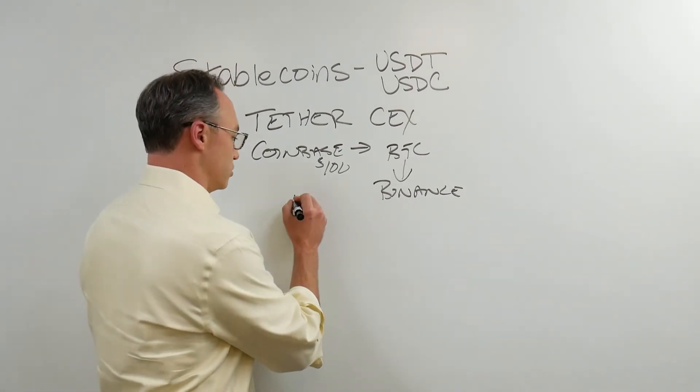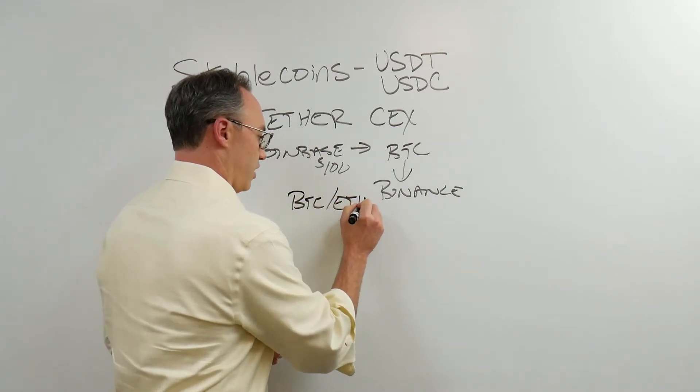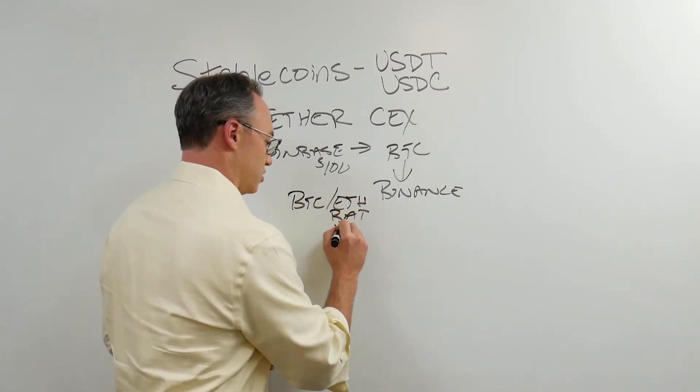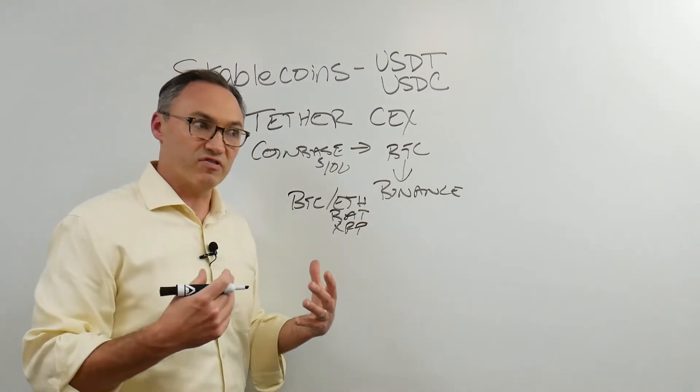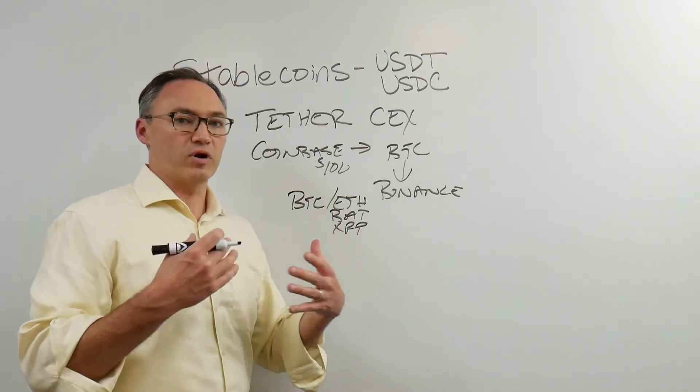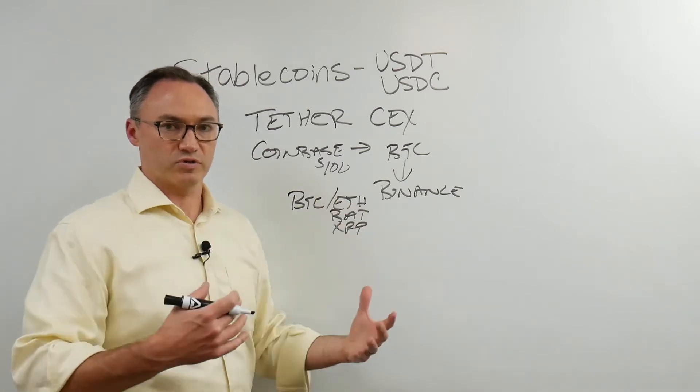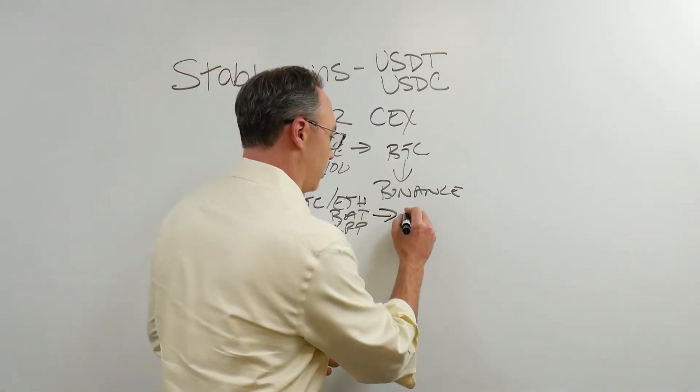Now, on Binance, I can trade Bitcoin for ETH. I can trade it for BAT. I can trade it for Ripple, whatever I want to do. I can trade Bitcoin against all these others. But at some point, I might go, look, I don't want it to be in any cryptocurrency. I think crypto is going to go down. I need it to go to dollars.